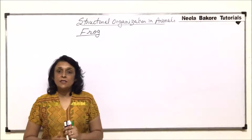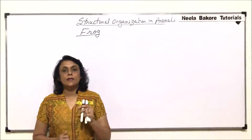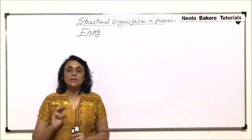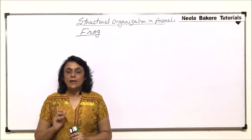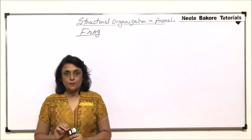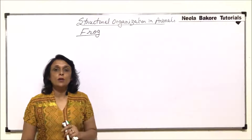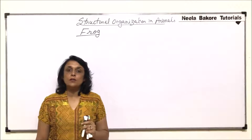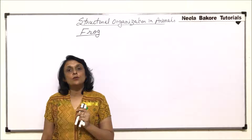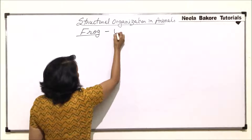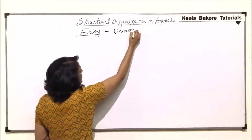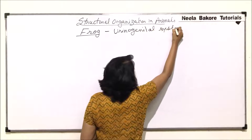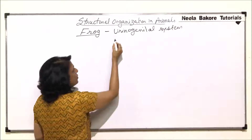In frogs, there is a common opening for three systems: the digestive system, excretory system, and the reproductive system. In male frogs, this combined system is called the urinogenital system. The name tells us it is a common system for two parts.